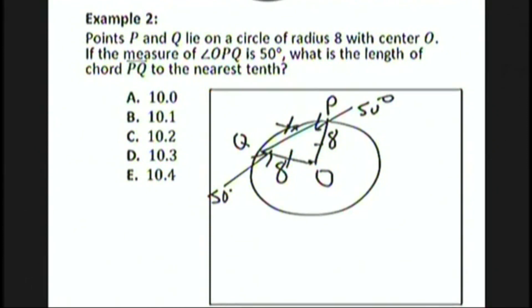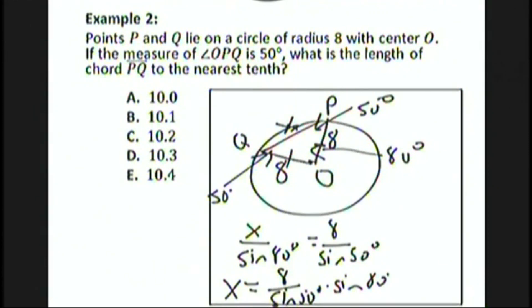So it would be nice to know angle POQ. Well, we could get that because a triangle has 180 degrees. We already accounted for 100 degrees, so that angle is 80 degrees. So we have x over sine 80 degrees equals 8 over sine 50 degrees. Multiply both sides by sine 80 degrees to get x equals 8 over sine 50 degrees times sine 80 degrees. Again, put this in your calculator and you'll get approximately 10.3, which is choice D.